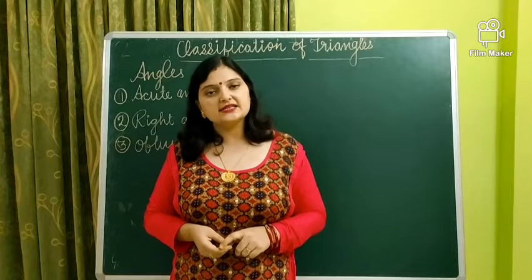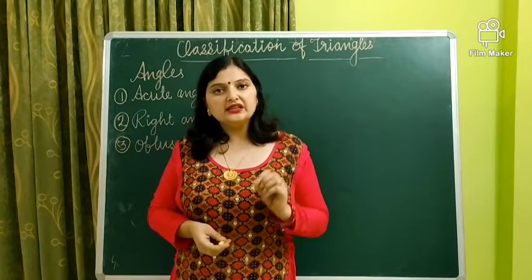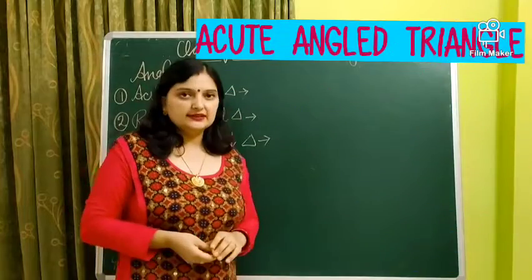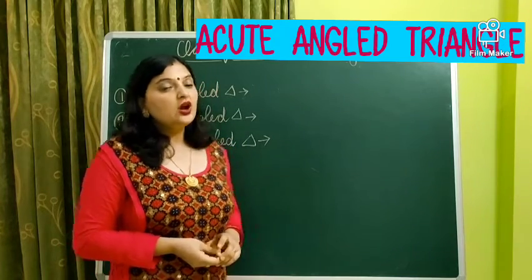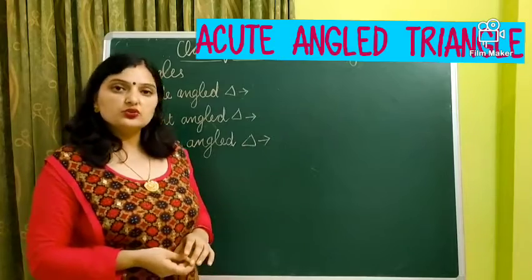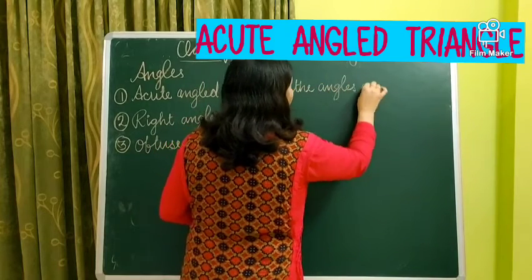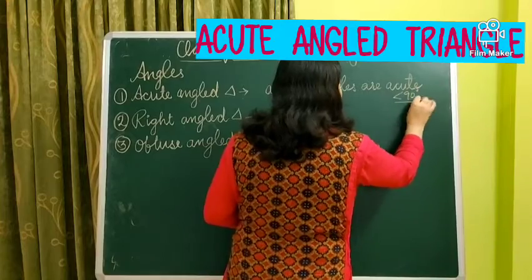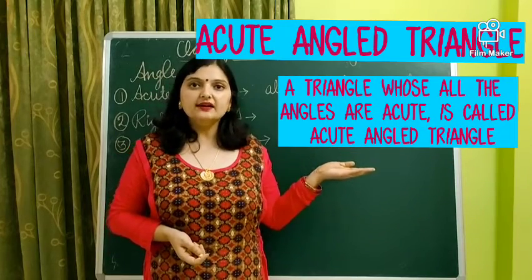Now let us discuss another classification of triangles which is based upon their angles. This classification is quite easy. The first is acute angled triangle. Acute angled triangles are those triangles whose all the angles are acute. An acute angle means an angle less than 90 degrees. So acute angled triangles are those triangles whose all the angles are acute.